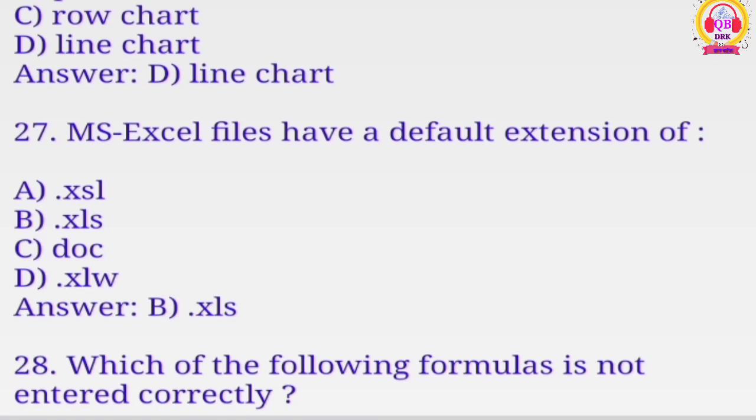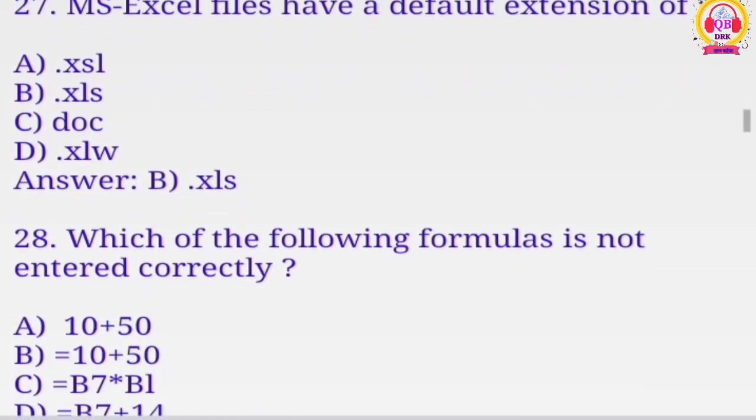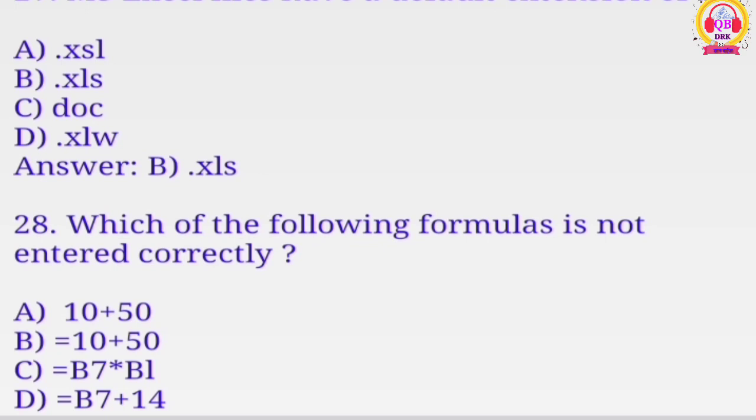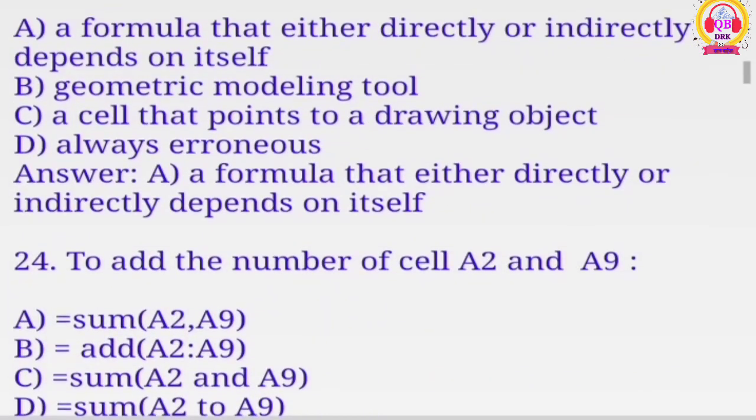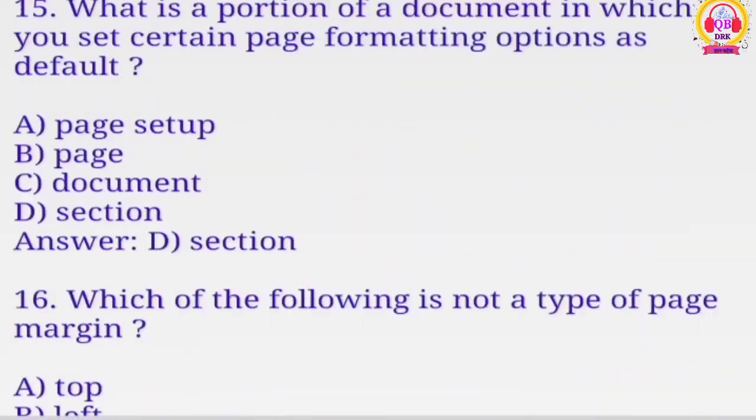Which of the following formula is not entered correctly? One of the options, 10 plus 50, equal to 10 plus 50, equal to B7 star B1, equal to B7 plus 14. Which one is correct? Please don't forget to leave the answer in comment box. You will have to find the best option. I will check it out. You will find the question, you will find the answer.